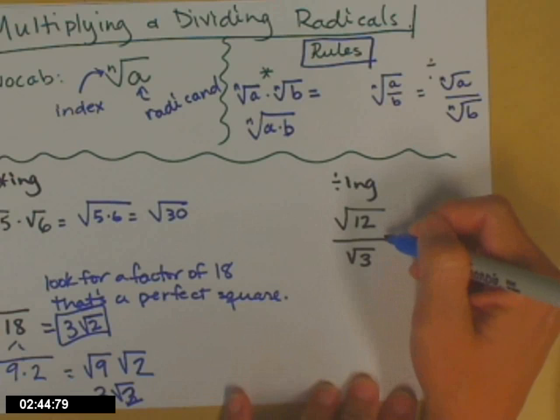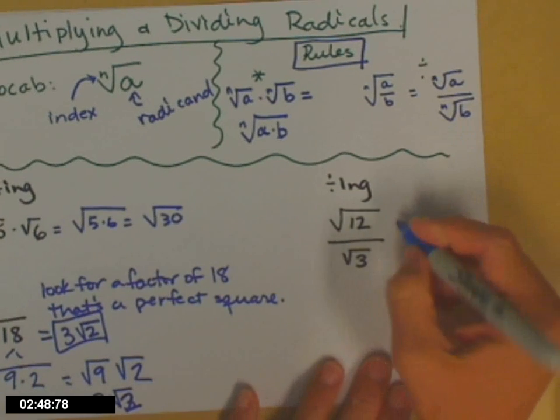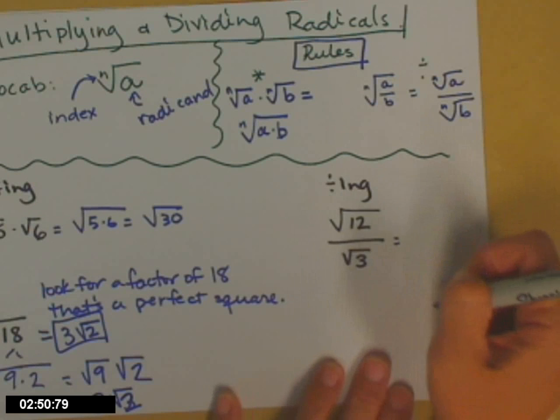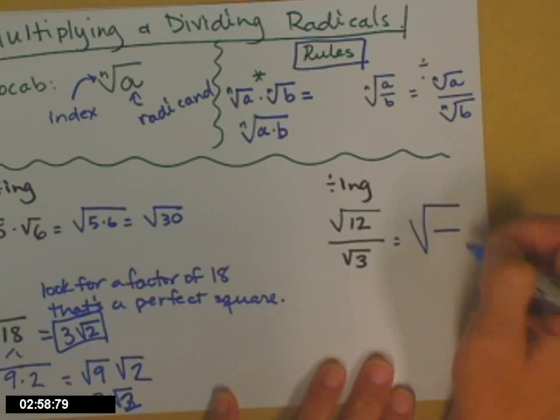Dividing, so I have the square root of 12, which I don't know, divided by the square root of 3. I don't know that either. A couple ways you can go about it. I'll show you one way. They're both square roots, same index, so I can write this under the same square root symbol.